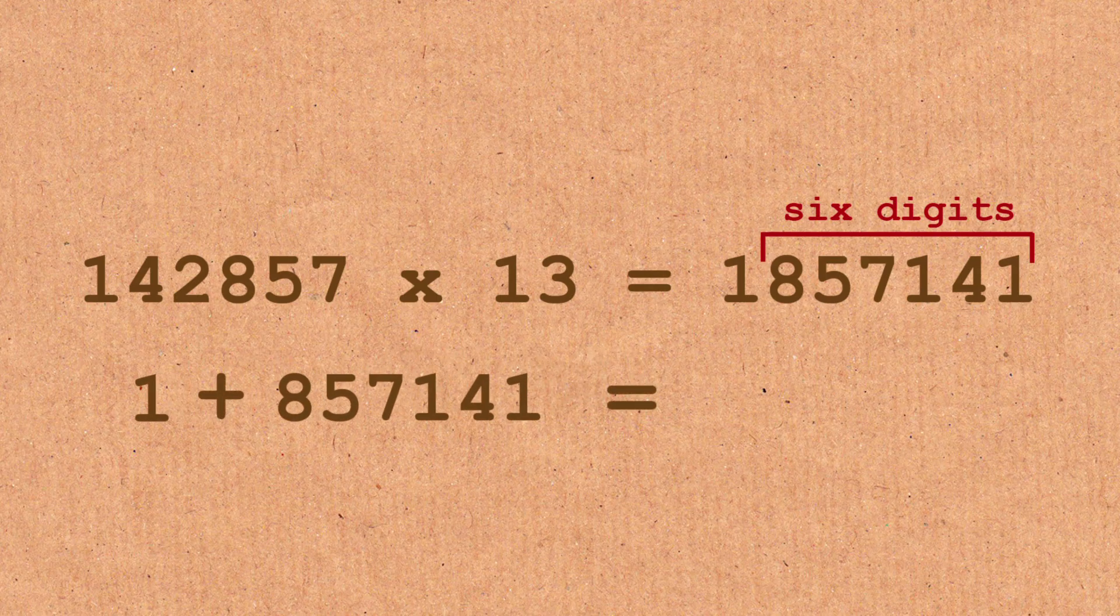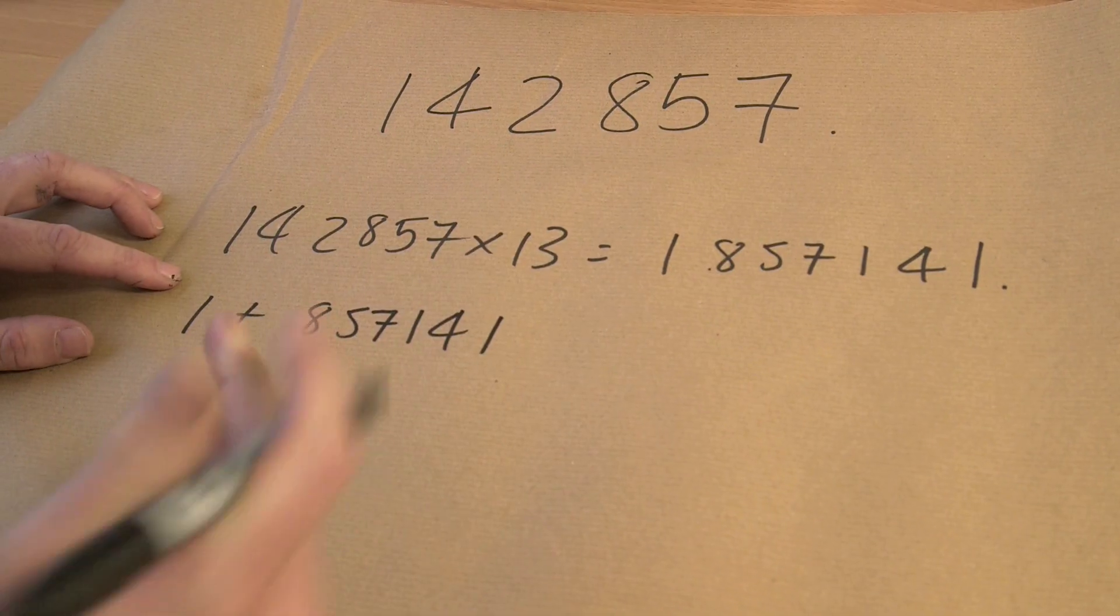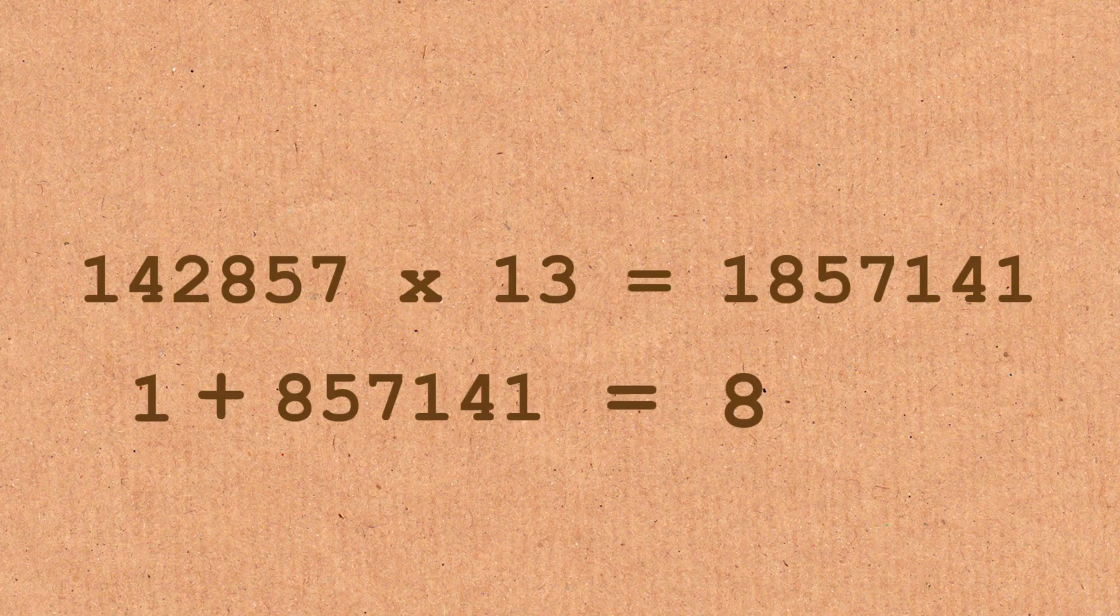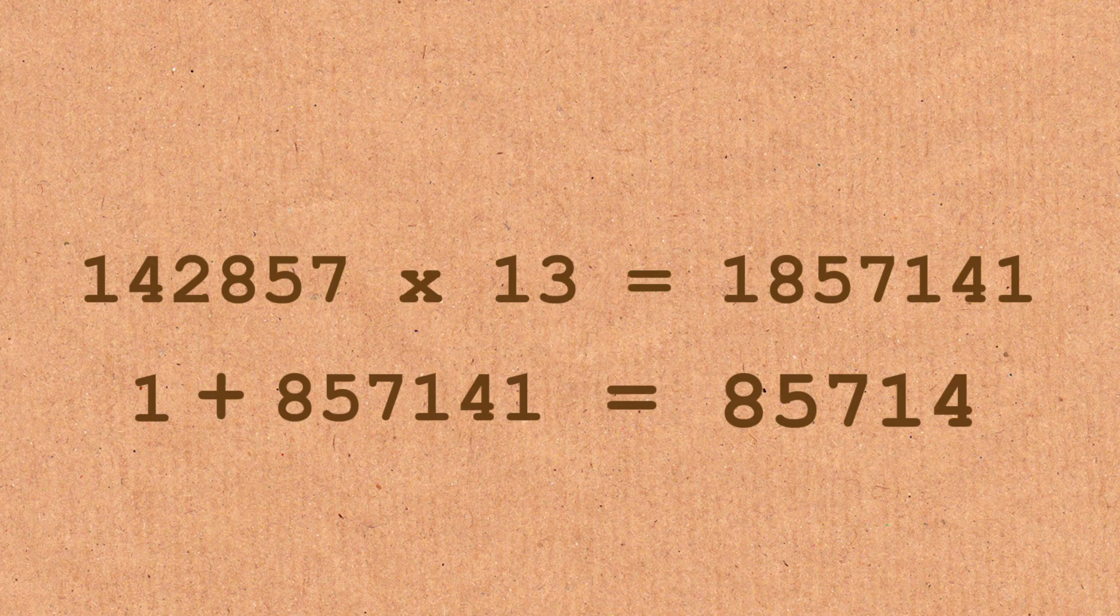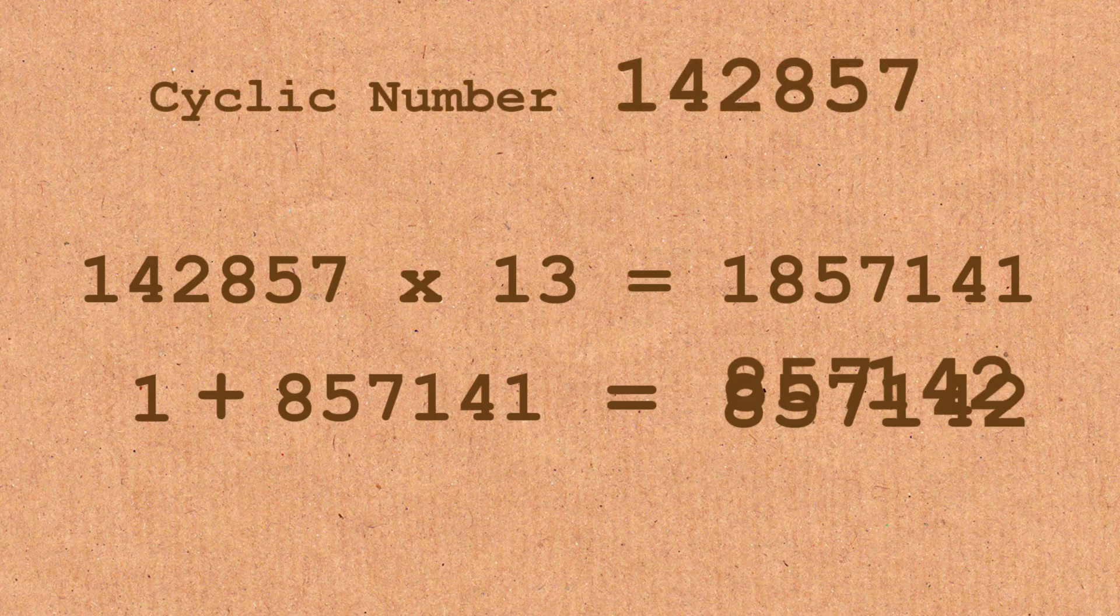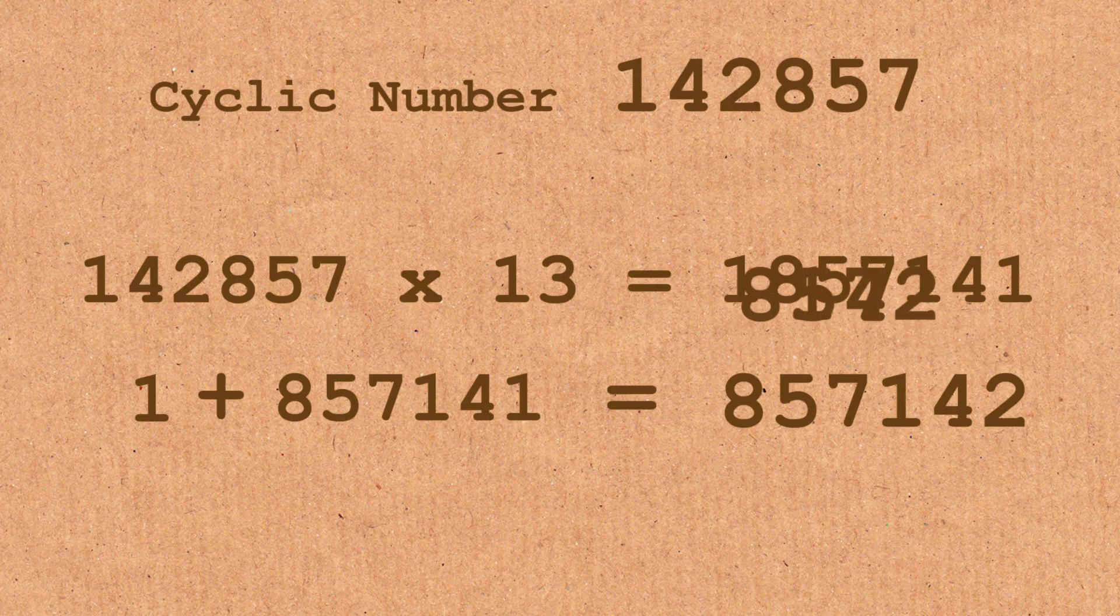That's one plus eight, five, seven, one, four, one. Now, I can do that. That is eight, five, seven, one, four, two. Which, if you look carefully, is a permutation of this guy.